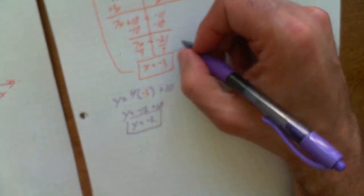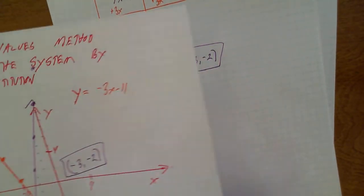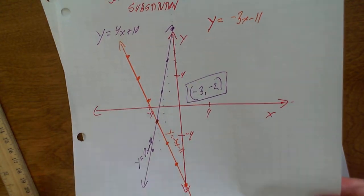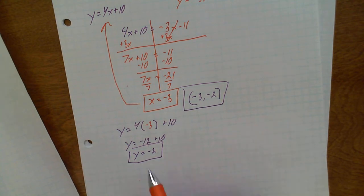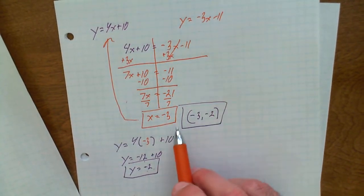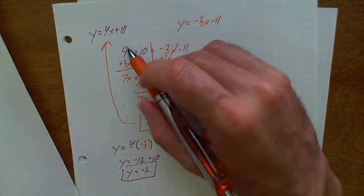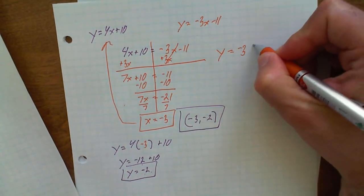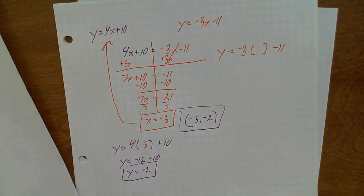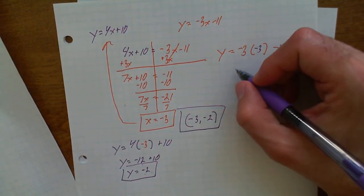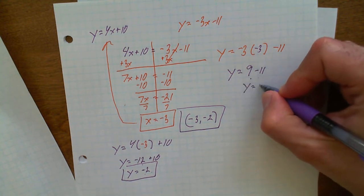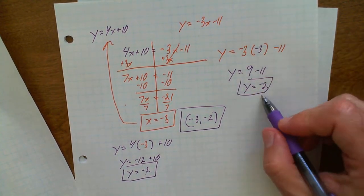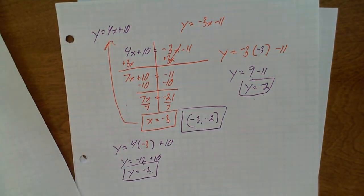My answer is negative 3, negative 2. What was my point of intersection through graphing? The same exact answer! So that's how you find the point of intersection through substitution using the Equal Values Method. But wait — let's also plug the negative 3 into the orange equation. y equals negative 3 times x minus 11. Plug in negative 3: y equals negative 3 times negative 3 — that's 9 minus 11. What is 9 take away 11? Negative 2. So you get the same answer no matter which equation you plug it into.